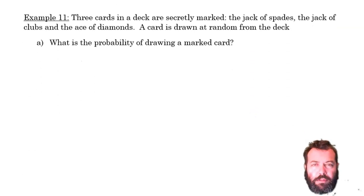Here's an example, and I think it makes a lot more sense once we look at an example. Consider a deck of cards, 52 cards, 4 suits. 3 cards in that deck are secretly marked: the Jack of Spades, the Jack of Clubs, and the Ace of Diamonds. A card is drawn at random from the deck.